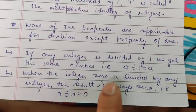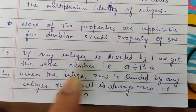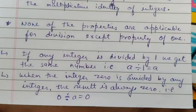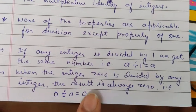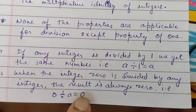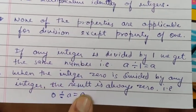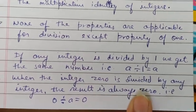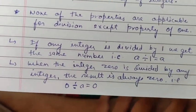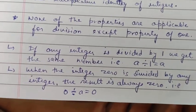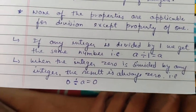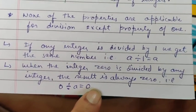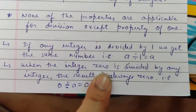When zero is divided by any integer, the result is always zero. But there is an exception: division by zero is not defined — you cannot divide by zero. So zero divided by an integer equals zero, but dividing by zero is undefined.